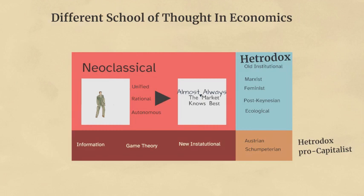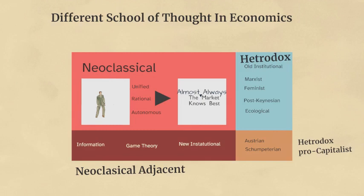However, that does not mean that neoclassical economics has stuck rigidly to its core assumptions. Rather, it has branched out into a number of schools of thought which each break one or two of its common assumptions, and often bring its methodologies into new areas not typically studied by the school. These include information economics, game theory, and new institutional economics. Many of these schools of thought extend economic analysis to new areas, which we will discuss in the next section.